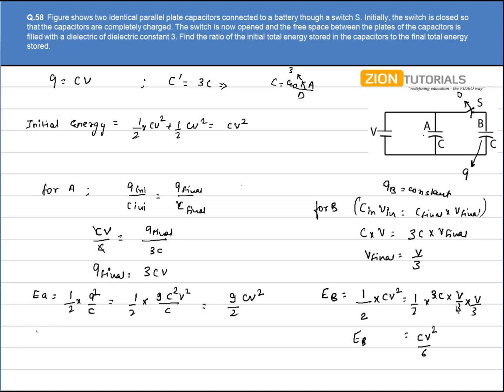So total energy after the switch is opened will be E total final, will be Ea plus Eb, that is 9 by 2 plus 1 by 6 CV squared, which gives me 14 by 3 CV squared. So the ratio of initial energy to final energy comes out to be E initial divided by E final. That is the answer.